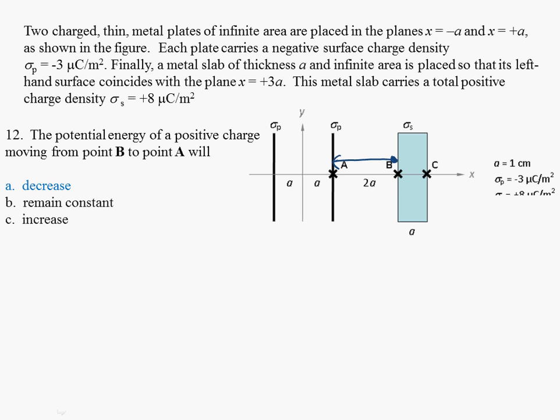To answer this, we need to figure out the direction of the electric field using superposition. We essentially have three charge slabs: sigma_p is -3, another is -3, and then sigma_s here is +8.